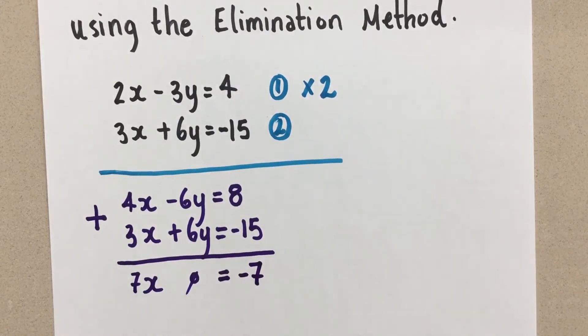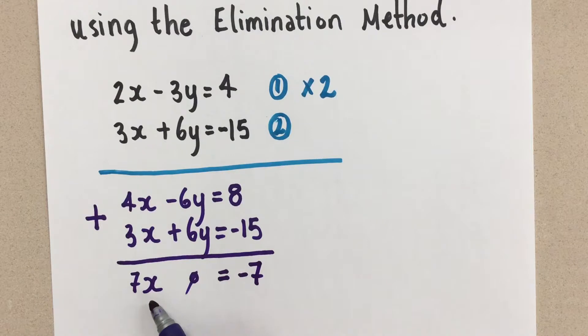8 plus negative 15 is going to give us negative 7. And so now look at the simple equation that we've created. 7x equals negative 7. And we know how to solve that.